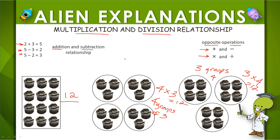So let's think about the multiplication and the division. If I know that 4 times 3 equals 12, I automatically know two division facts. I know that 12 divided by 4 equals 3, and I know that 12 divided by 3 equals 4.